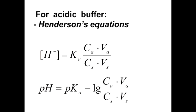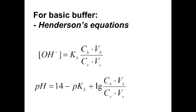CA and VA are the concentration and volume of the acid; CC and VC are the concentration and volume of the salt used to prepare the buffer solution. For basic buffer solutions, use the formula for OH⁻ ion concentration and then calculate pOH and pH. It is easier to calculate OH⁻ first, then use that value to calculate pOH and pH.